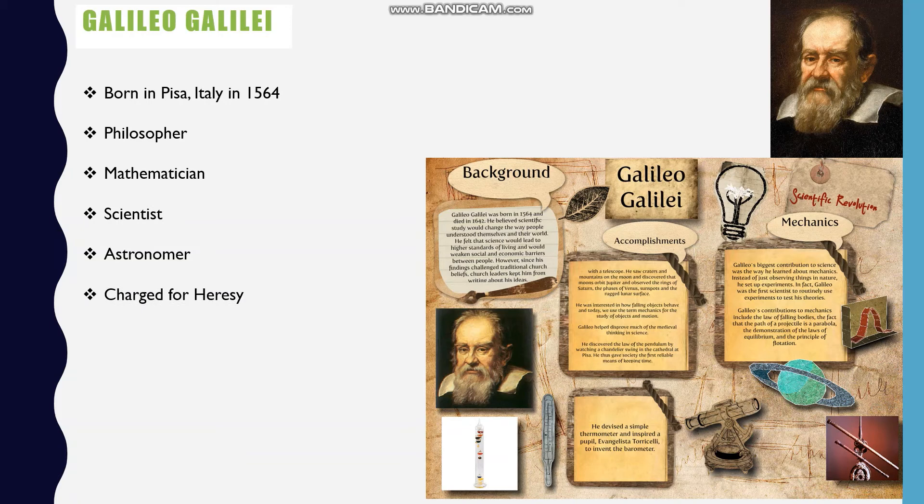In the latter parts, Galileo was charged for heresy because his ideas contradicted the views of the church. He was put under house arrest and spent the last years of his life at home. Then he died in Archechi, Italy in 1642.